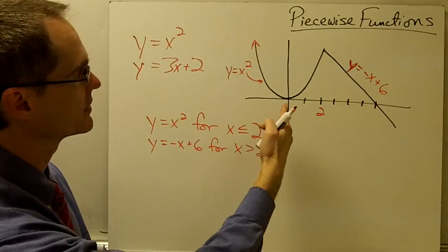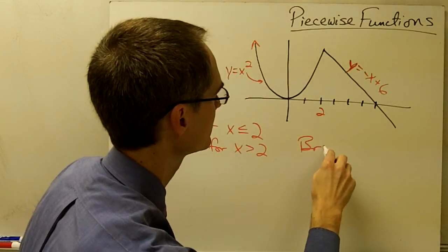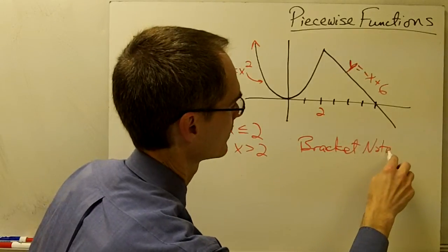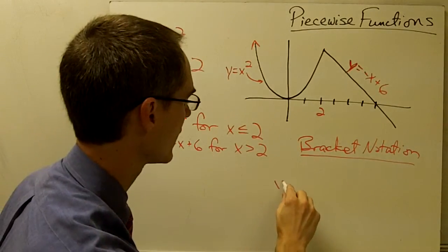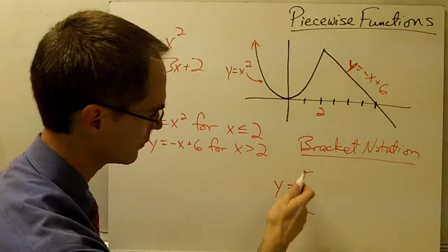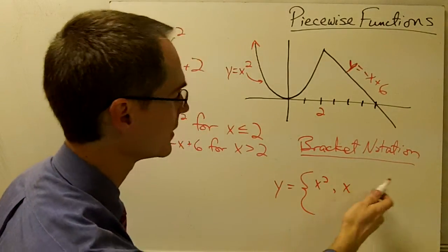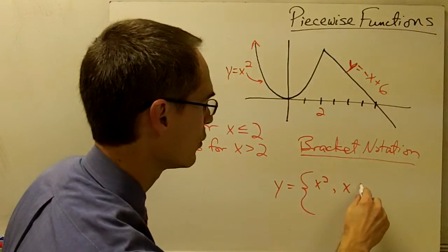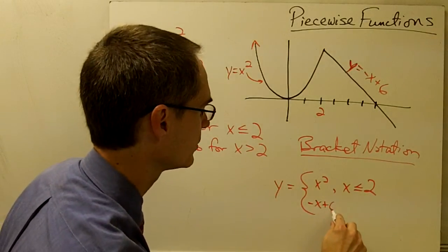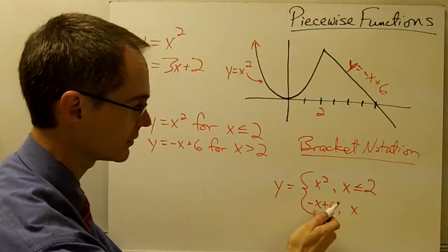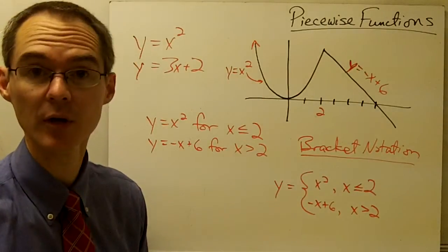One way that you often see piecewise functions defined is called bracket notation. And bracket notation looks something like this. For this function, we would write y equals x squared, comma, and then the domain where y equals x squared — so x less than or equal to 2. And then y equals negative x plus 6, comma, and the domain where x is greater than 2. This is the bracket notation that defines this piecewise function.